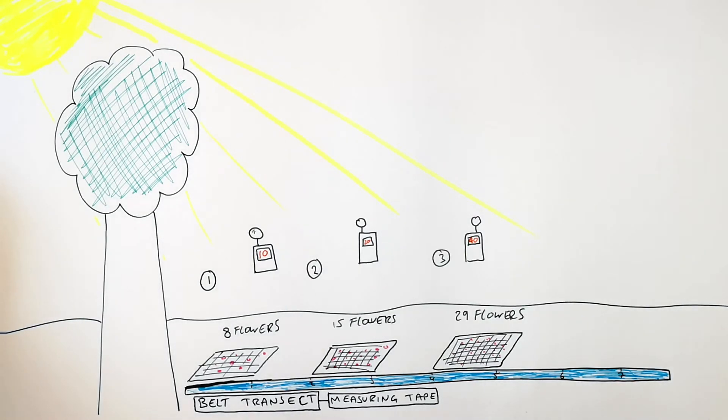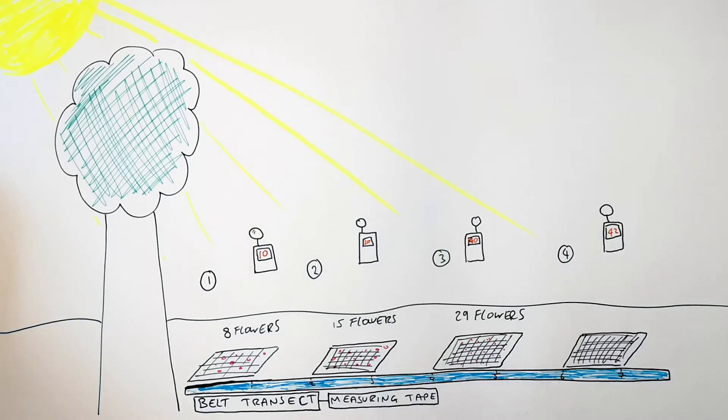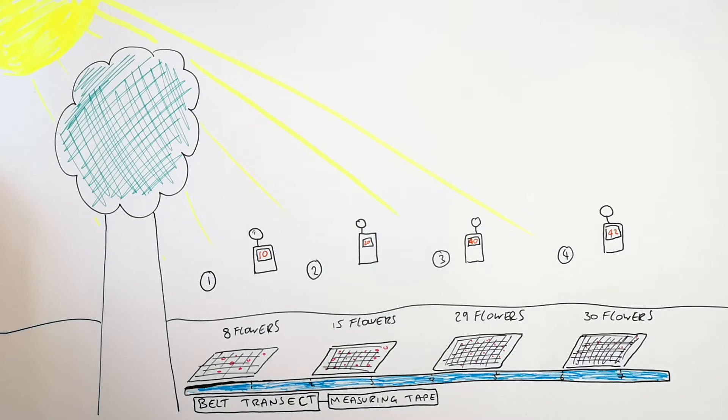You then lay the quadrat for a final time. In this case the light intensity is 42 and there are 30 flowers.